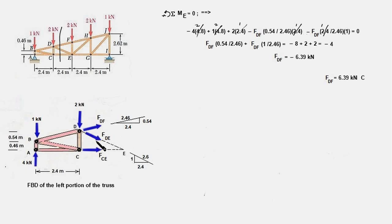So let us first compute the moment of all the forces about point E. The 4 kN force here would produce a clockwise moment about point E and the 1 kN force would produce an anti-clockwise moment. The moment arm for these two forces would be the distance AE which is 2.4 plus 2.4, that is 4.8 meters. The moment of this force 2 kN will be anti-clockwise and the moment arm will be 2.4 meters.